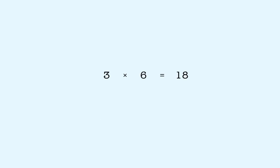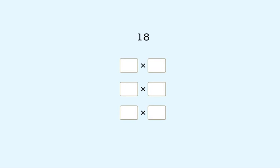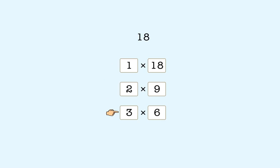In a previous lesson, you learned that factors are numbers that you multiply together. Three and six are factors of 18. You also learned how to find all of the factors of a number. In this example, the factors of 18 are 1 and 18, 2 and 9, and 3 and 6.